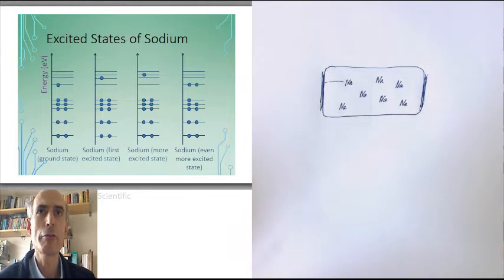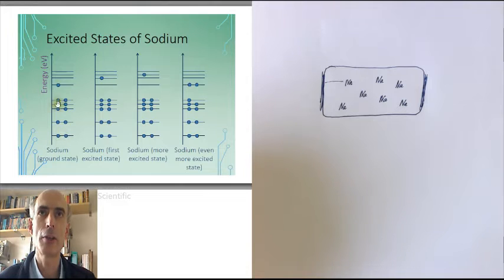So if I have a sodium atom in the ground state like this, it might be hit by an electron, which knocks an electron up into a higher orbit, or an even higher orbit, and so on.